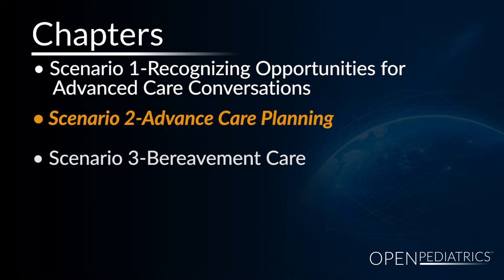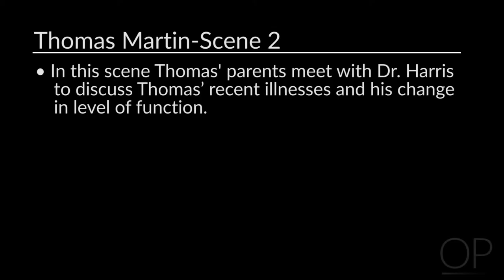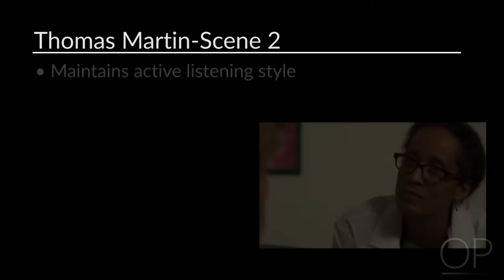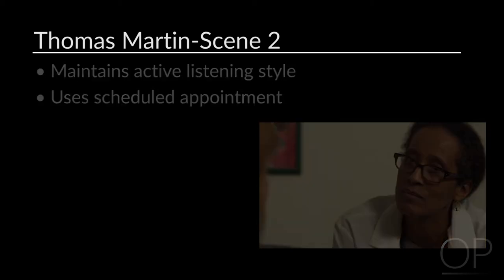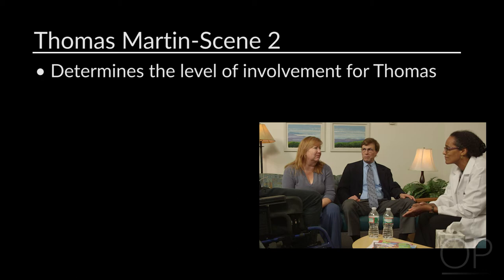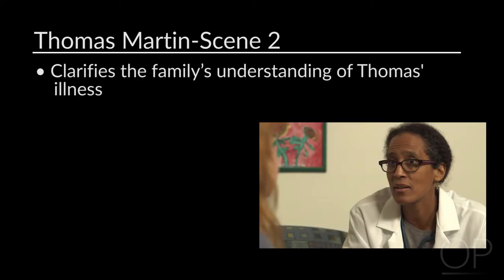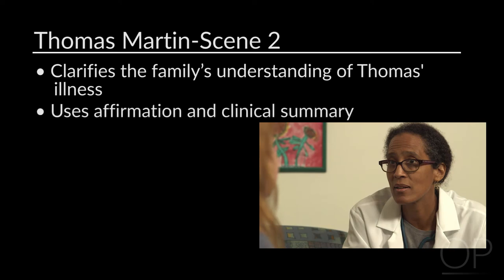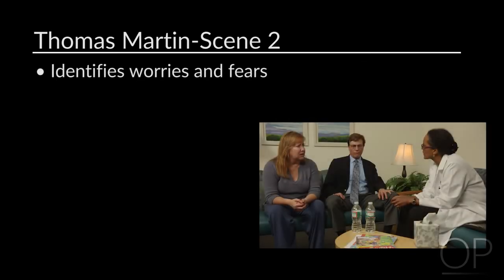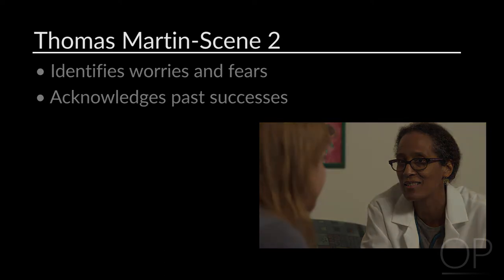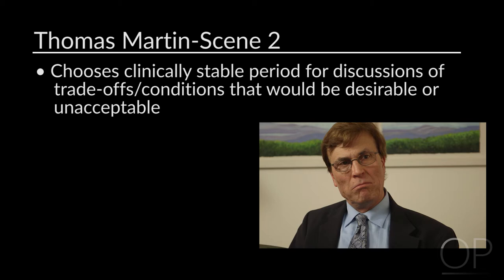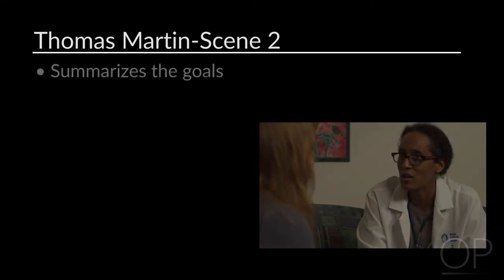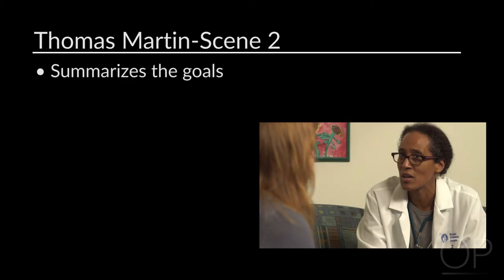Scenario 2: Advanced Care Planning. In this scene, Thomas's parents meet with Dr. Harris to discuss his recent illnesses and change in level of function. Noteworthy features: Dr. Harris maintains an active listening style and uses a scheduled appointment to avoid interruptions. She determines the family's sense of appropriate involvement for Thomas in decision-making. She asks about the family's understanding of his illness and uses affirmation and clinical summary. She identifies specific worries and fears, acknowledges the family's past successes, and has chosen a period of clinical stability to discuss trade-offs. Finally, she summarizes agreed-upon goals as a basis for planning Thomas's care.